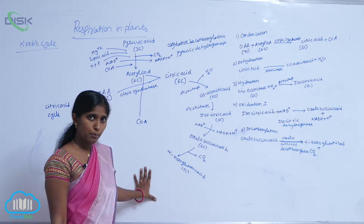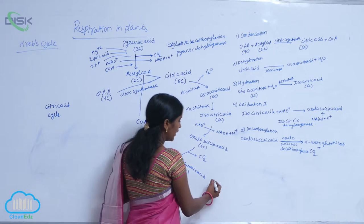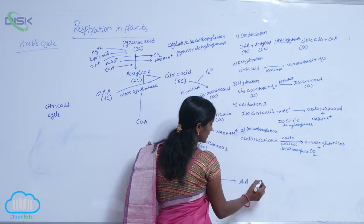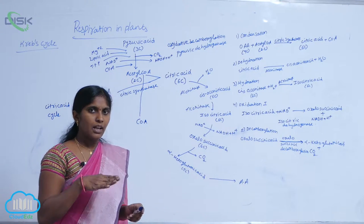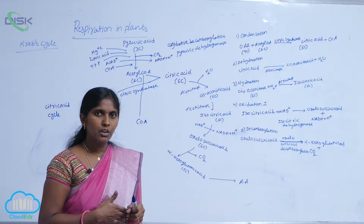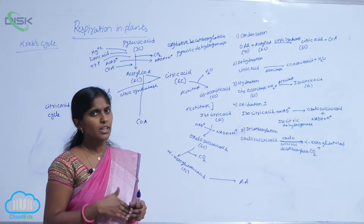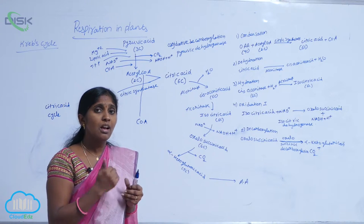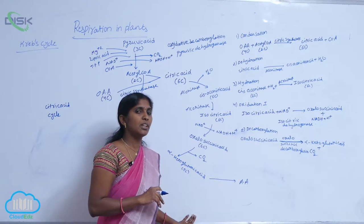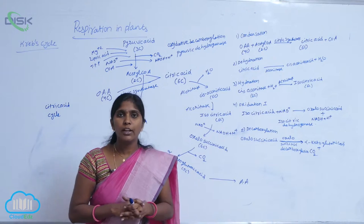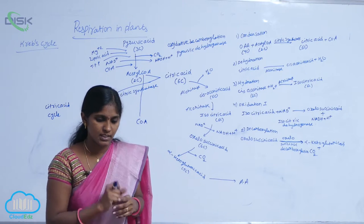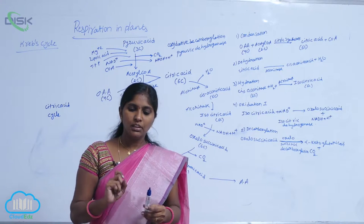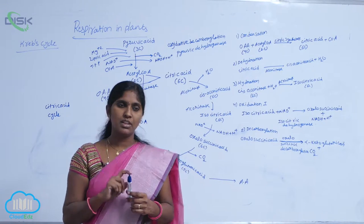Alpha-ketoglutaric acid is an intermediate compound very essential for the production of amino acids. After the formation of alpha-ketoglutaric acid, it may enter into the following reactions of the Krebs cycle or also be involved in the synthesis of different amino acids.